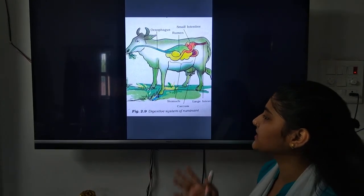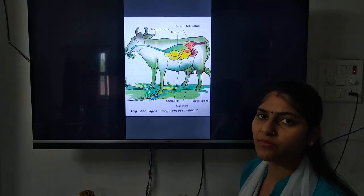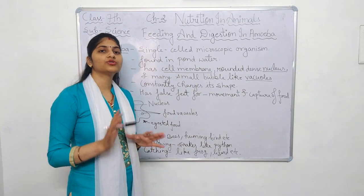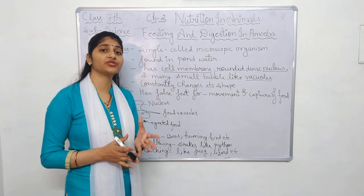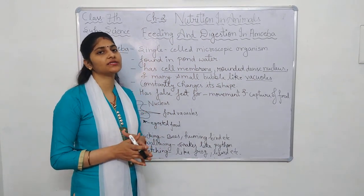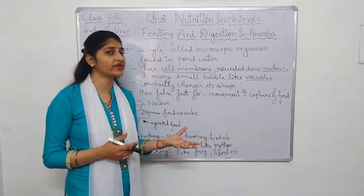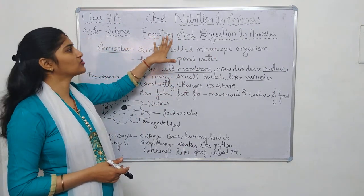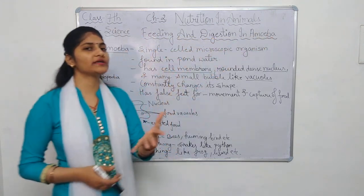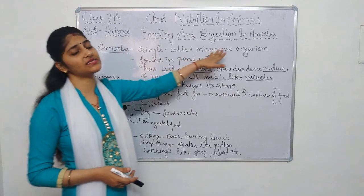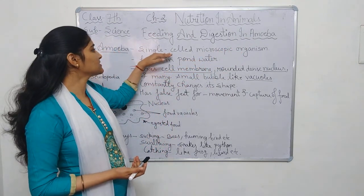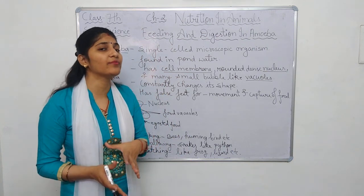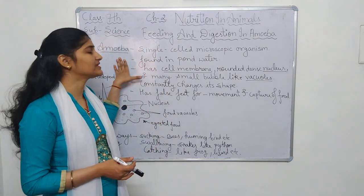I hope you have understood the digestive system of a ruminant. Now let us see some other feeding and digestive systems in other animals. So far we have understood digestion in animals which have a digestive system. Now let us understand digestion in animals which do not have a digestive system. For that, let us see the example of amoeba. Amoeba is a single-cell microscopic animal — this organism cannot be seen by the naked eye. We need a microscope to see it.